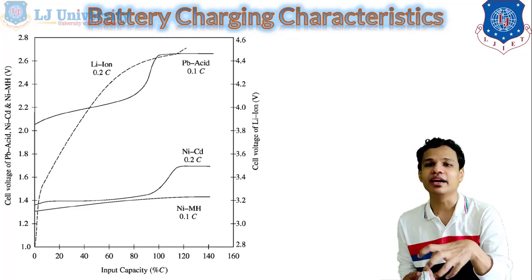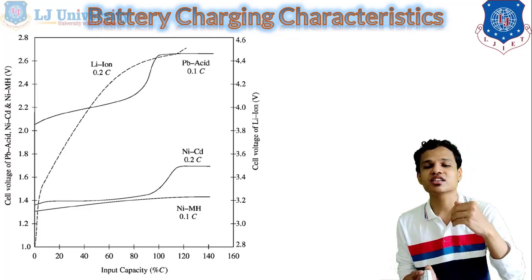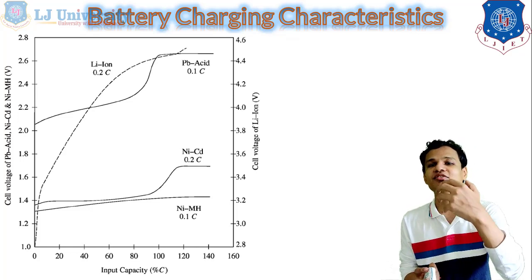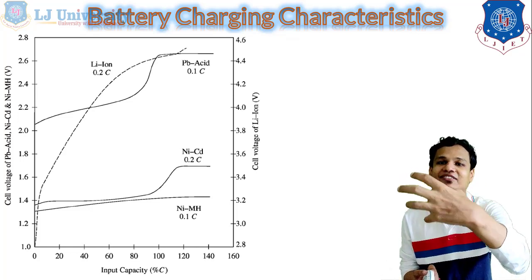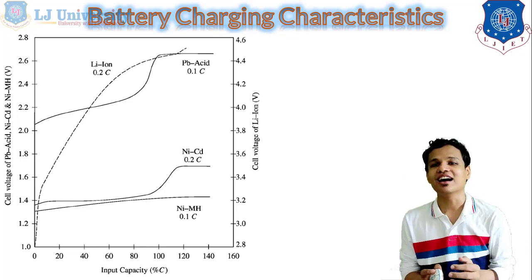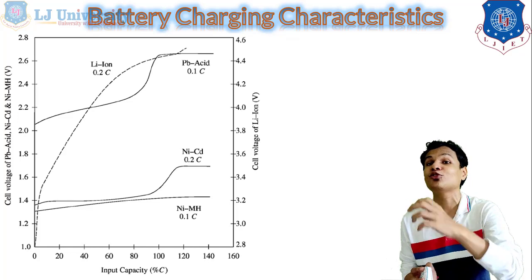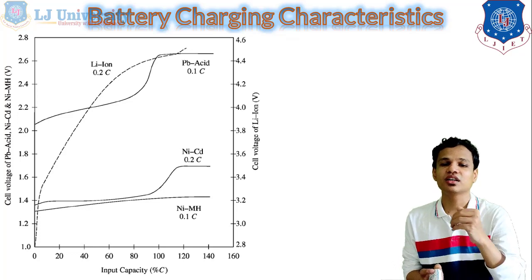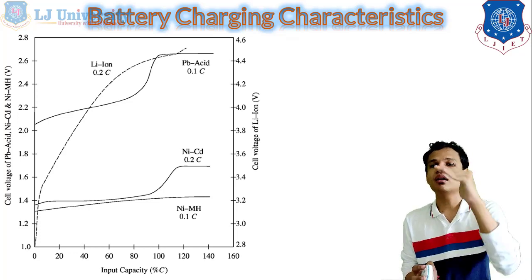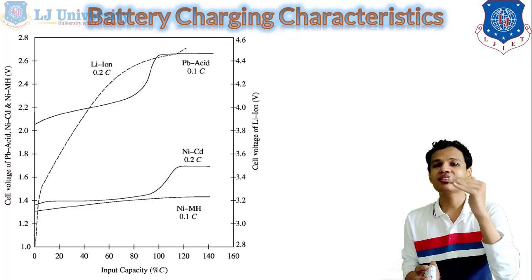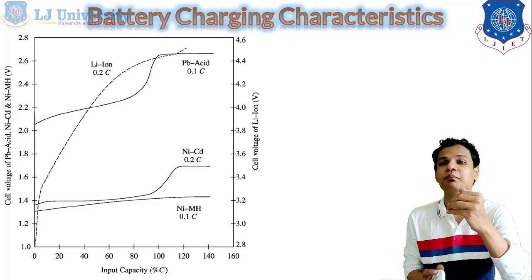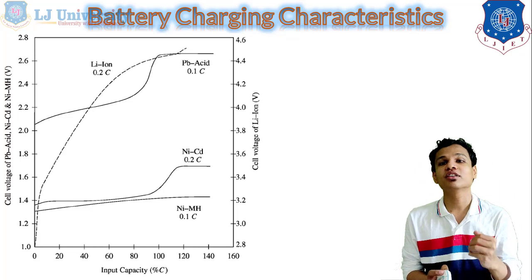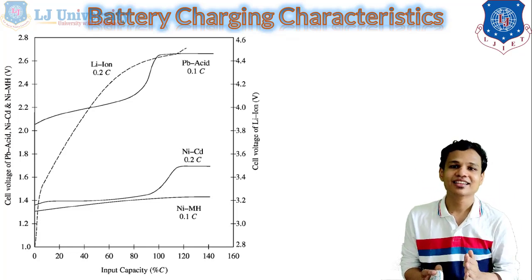Second, you can see the nickel cadmium battery. After the battery is charged at more than 80%, the voltage increases — it gets higher — and after the charging works, the value of the current is 0.2C. The third one is the lead acid battery, where you can see an S-shape curve. After 80 to 90% charging of the battery, the voltage increases.